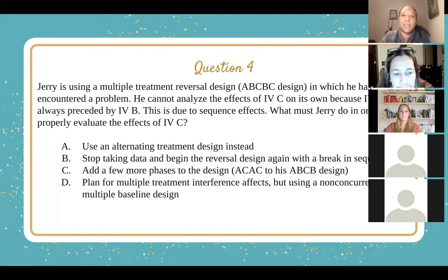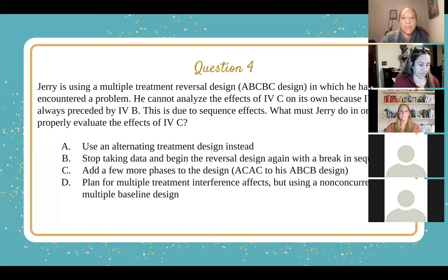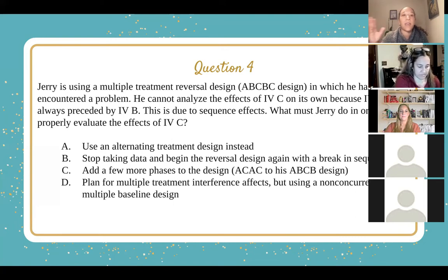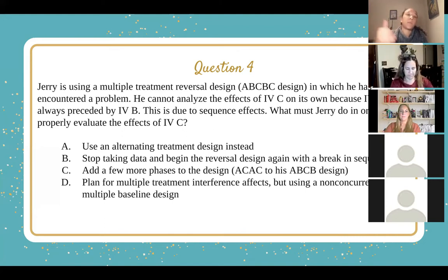The answer here is C — you have to add more phases to the design. The problem is that Jerry did one baseline, then implemented treatment B, then treatment C, reversed back to B, then C again — but he never returned to baseline. So you do want to return to baseline by adding in more phases.